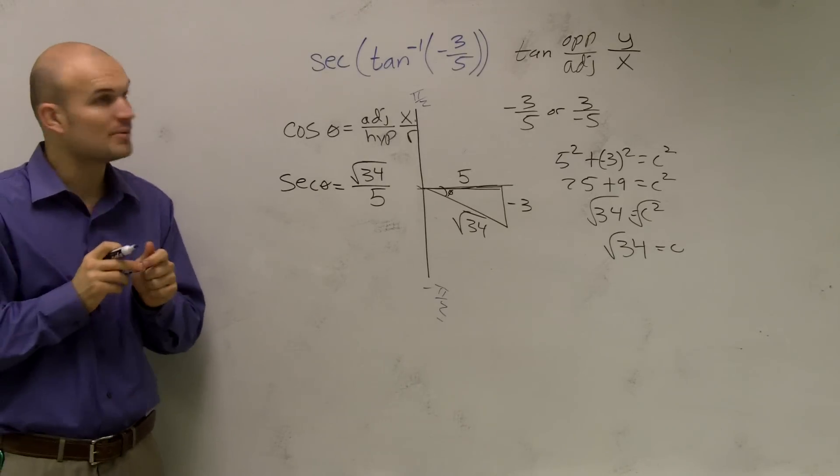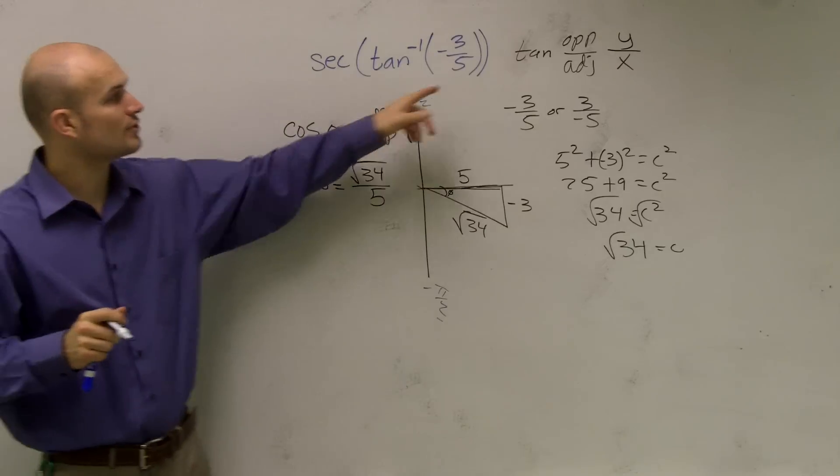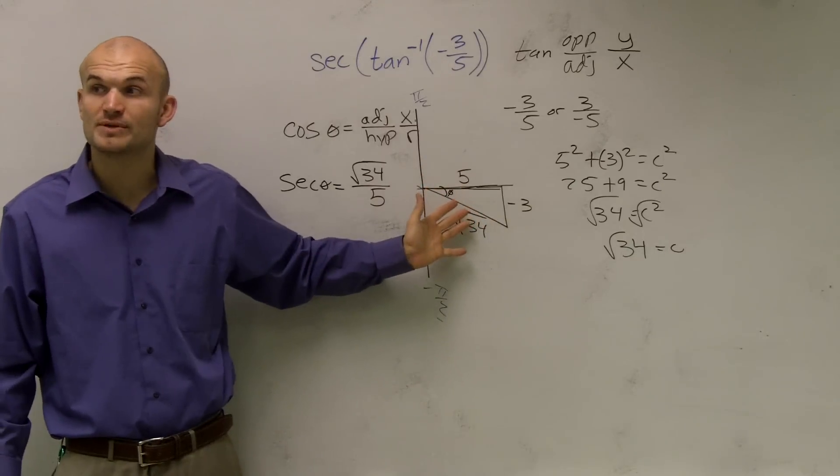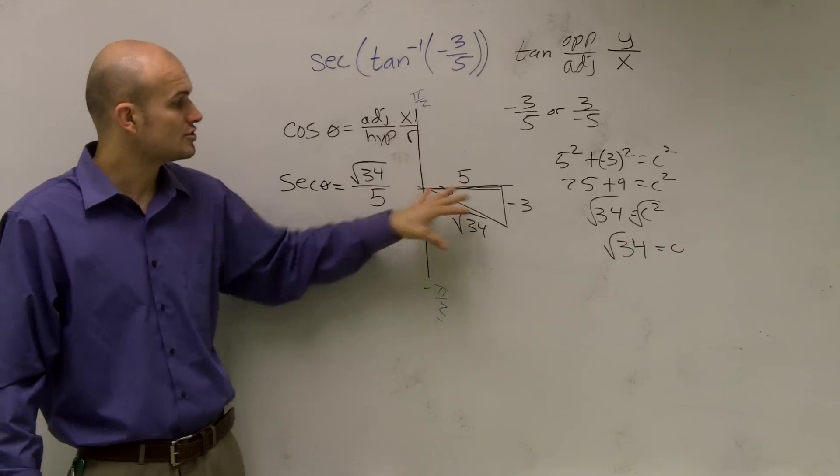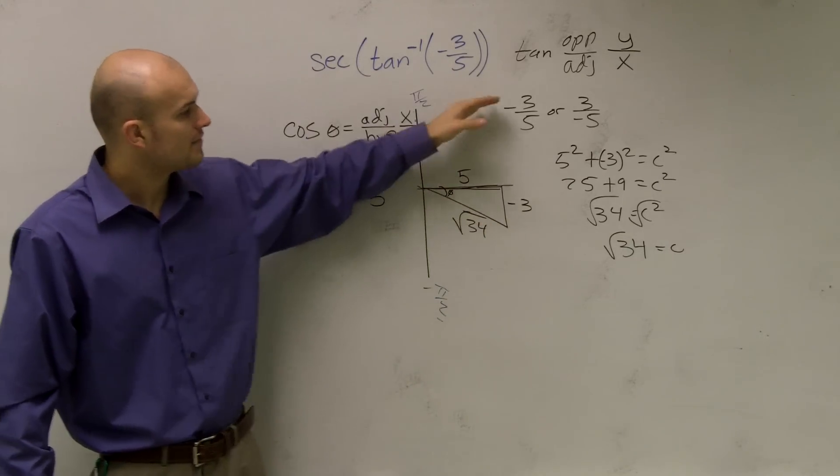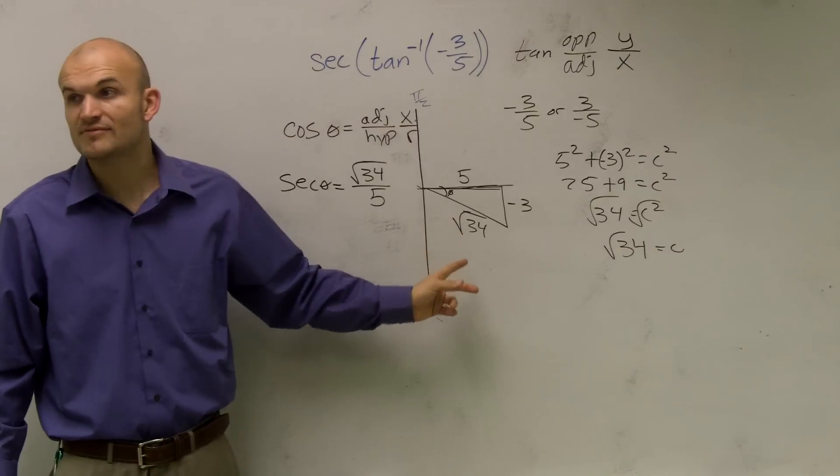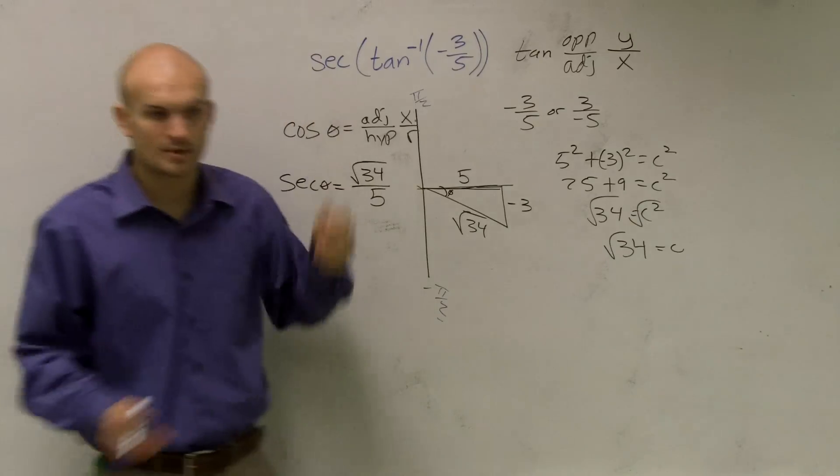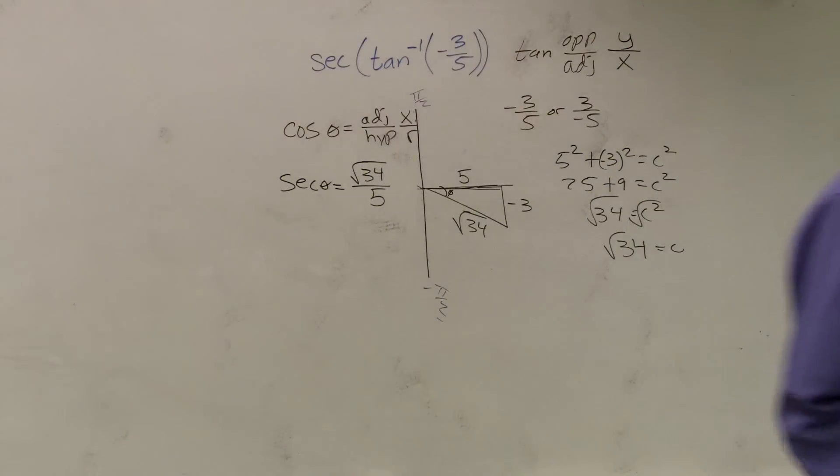So when you have a problem like this, it's important for you to make sure that you just determine what triangle you're going to be using. Then find out your missing value and then use your trig value to find the rest of it. Make sense?